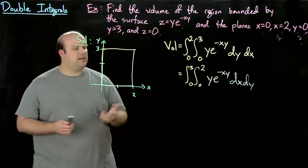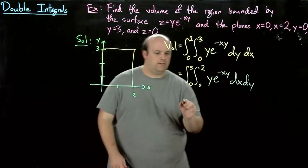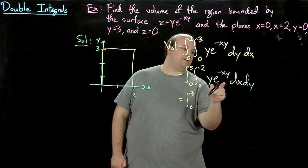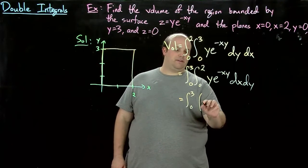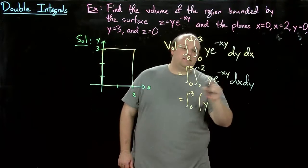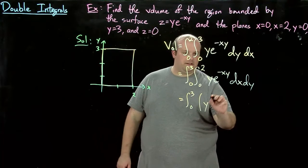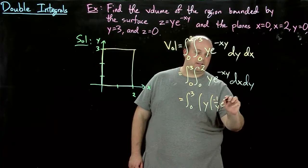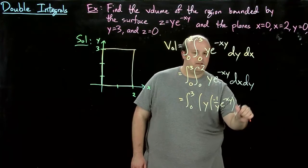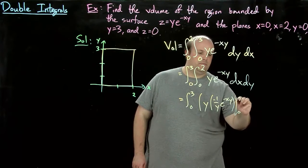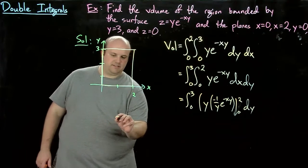So now we have this, and now it's pretty straightforward what to do. First we integrate with respect to x, and we get y. The integral of that with respect to x is going to be minus 1 over y, e to the minus xy, and the bounds from 0 to 2 dy.